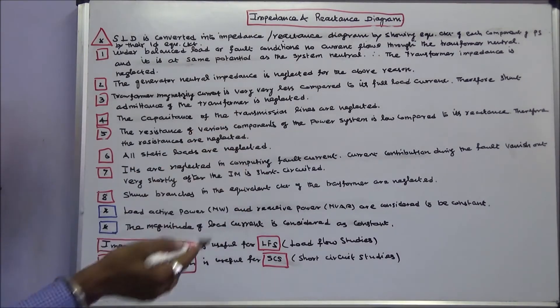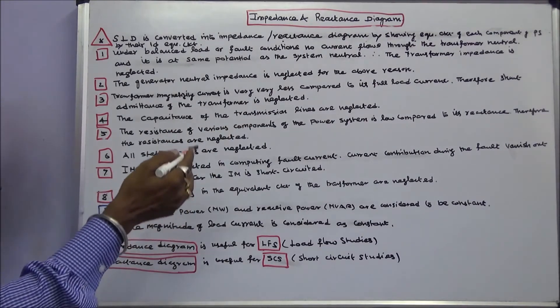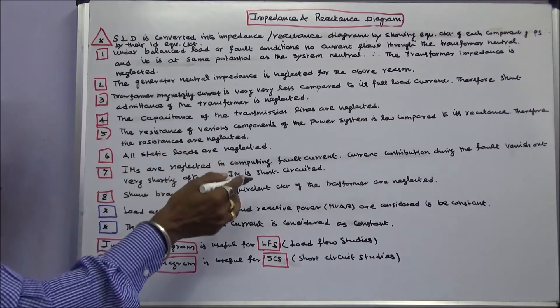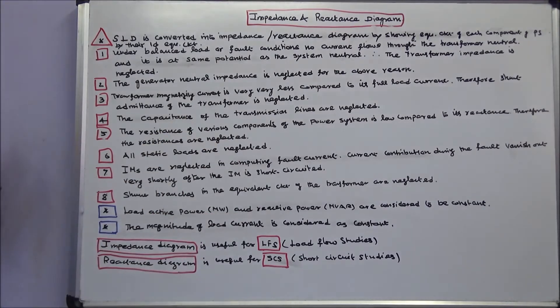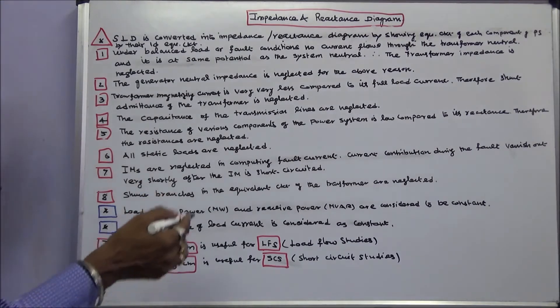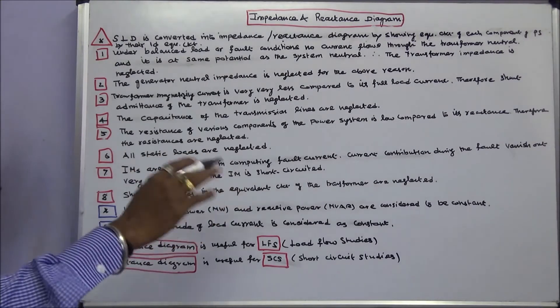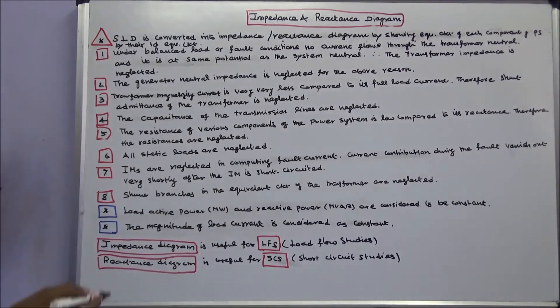Current contributions during the fault vanish out very shortly after the induction motor is short-circuited. Eighth, shunt branches in the equivalent circuit of the transformer are neglected. Ninth, load active power megawatt and reactive power mega volt ampere reactive are considered to be constant. This is highly used in the load flow studies.